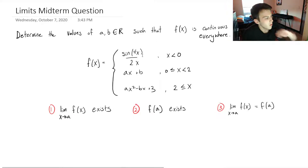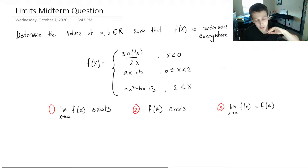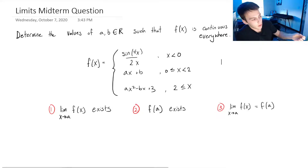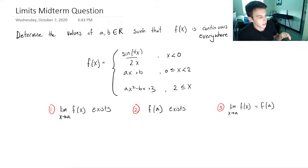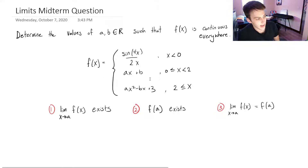Looking at this question, the most important points are where we're switching behavior of our function. When x is less than 0, we're defined by sin(4x)/(2x); then it switches at x=0 to become Ax + B. At x=0 there needs to be a smooth transition from the first behavior to the second. The same applies at x=2, where we transition from the middle behavior to the last quadratic behavior. We need to satisfy all three continuity conditions at both transition points.